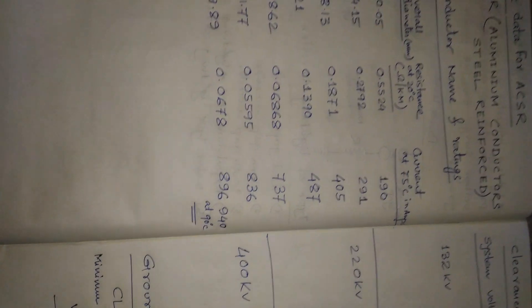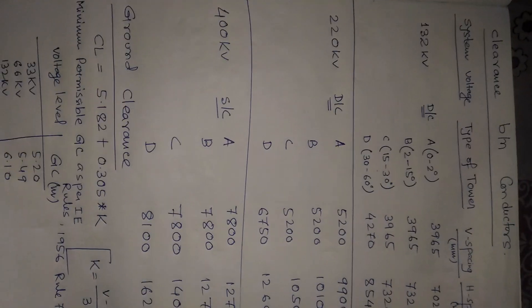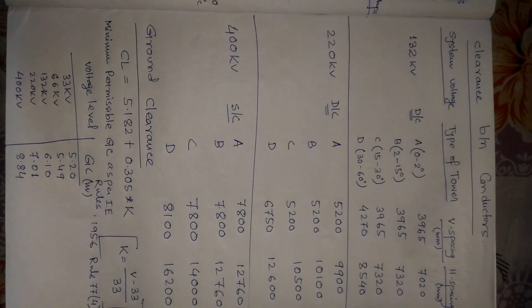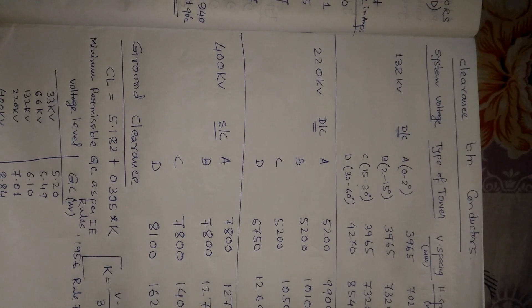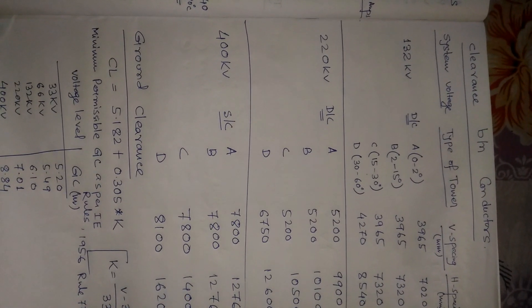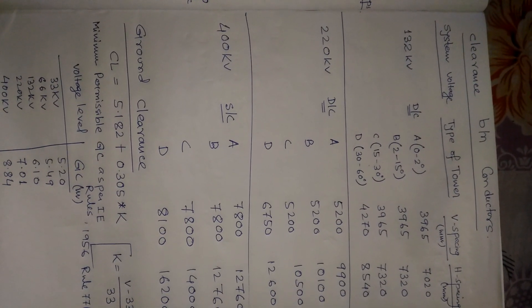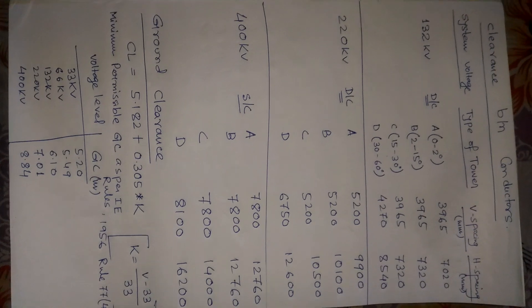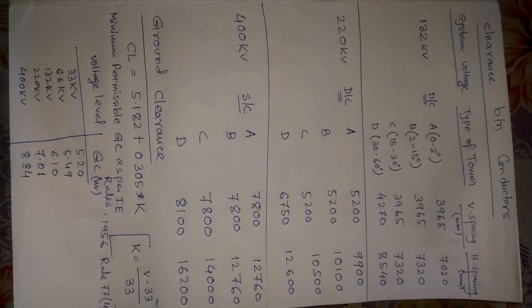Now we discuss clearance between conductors. Note that all data provided here are approximate. For a 132 kV double circuit line, there are four tower types: A-type (0–2 degrees), B-type (2–15 degrees), C-type (15–30 degrees), and D-type (30–60 degrees). The data covers vertical spacing and horizontal spacing between conductors for 132 kV, 220 kV, and 400 kV lines.